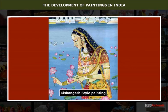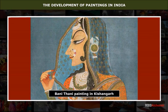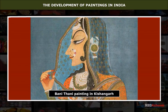Kishangar painting developed into a very important school of Rajasthani painting in the 18th century. Raja Sammat Singh was the chief patron of this school, and Nihal Singh was the most important court painter. The most popular subject of these paintings was the Krishna-Radha alliance.